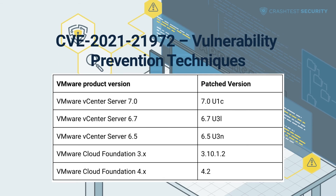VMware Cloud Foundation has released several patches for each vulnerable configuration. The table in the video shows the fixed versions for vulnerable software versions. If applying the patch is not immediately feasible, VMware also provides a temporary solution that makes the vRealize Operations plugin incompatible.